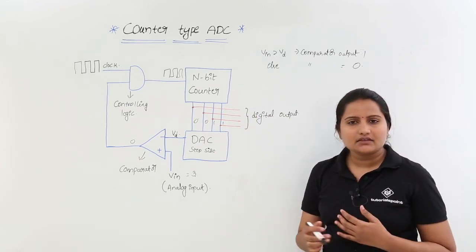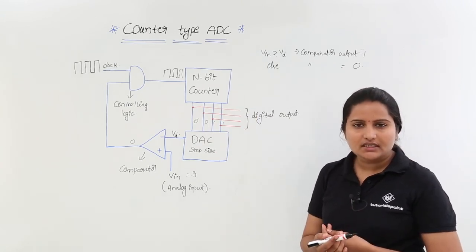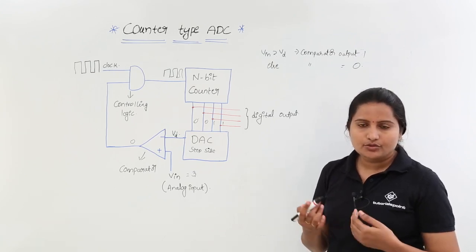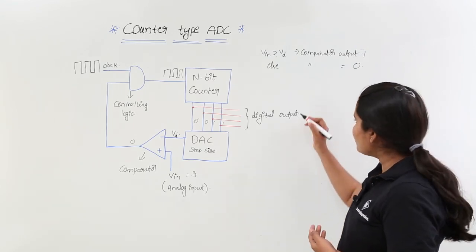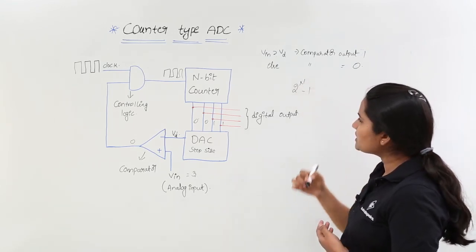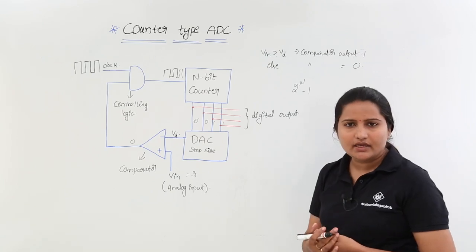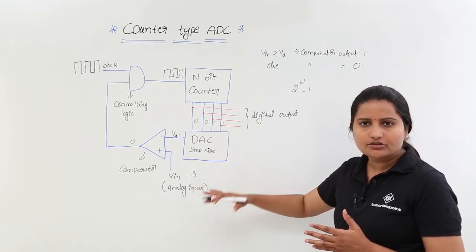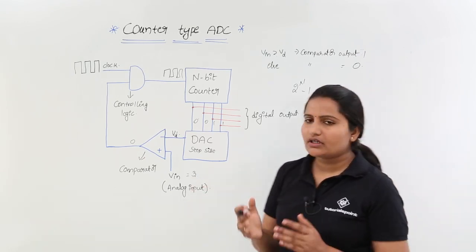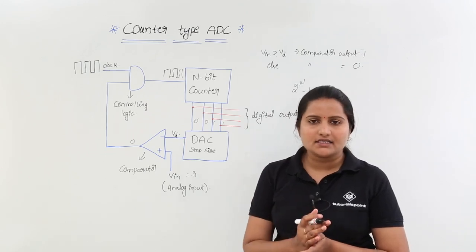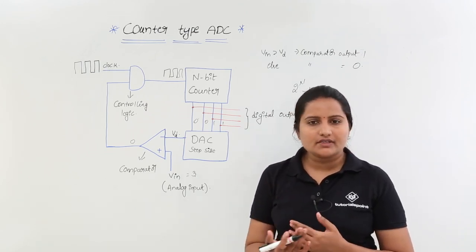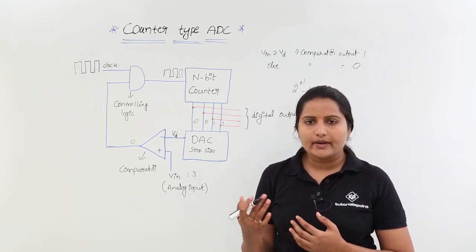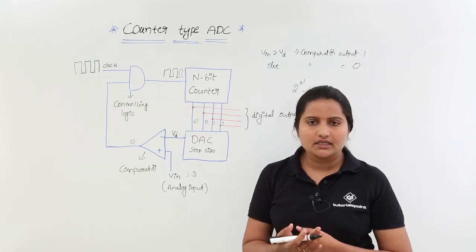The delay in this circuit is high. The disadvantage of counter type ADC is that it requires 2^n minus 1 clock pulses to complete the conversion, so it is a slower process compared to other ADCs. In the next classes we will see other analog to digital converters — the flash type or parallel type, and the successive approximation type.